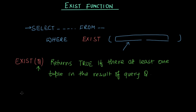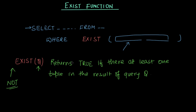Similarly, alongside EXISTS we can also use the keyword NOT. The whole thing is then reversed — NOT EXISTS(q) acts in the reverse manner: when EXISTS would be false, NOT EXISTS will be true.